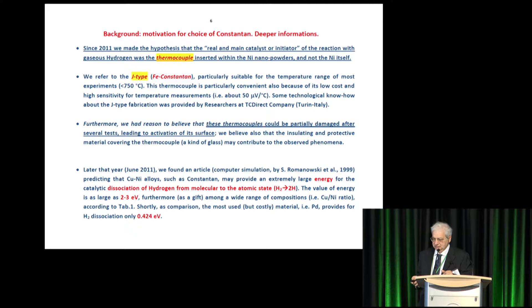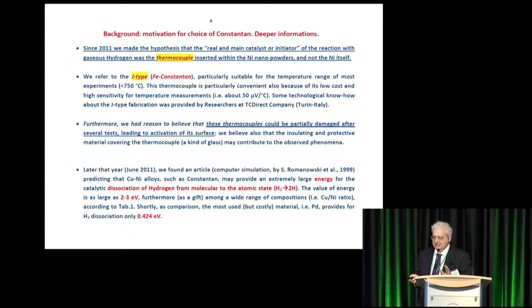Later on, we have very, very good news in June 2011. We found, then, 12 years before, a Poland group, using a supercomputer, found that the Constantin is the best, best material for hydrogen dissociation. Even better than usual palladium.